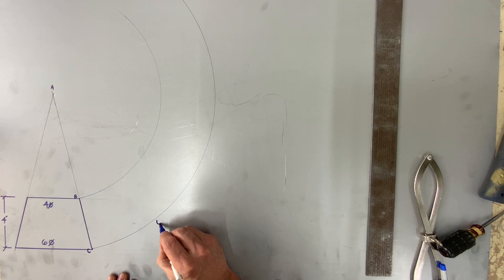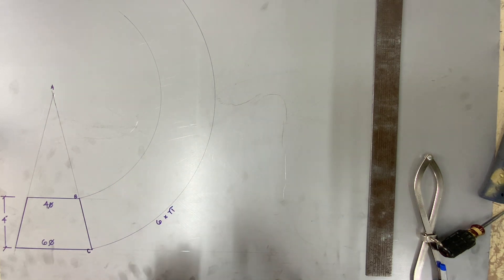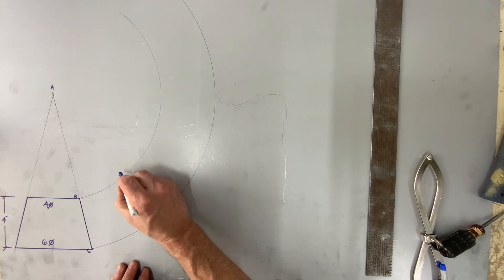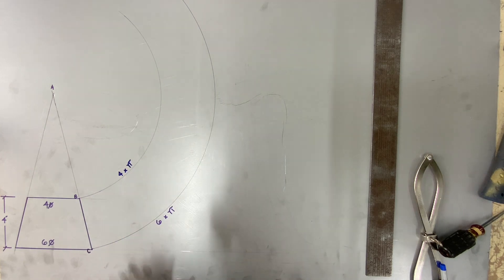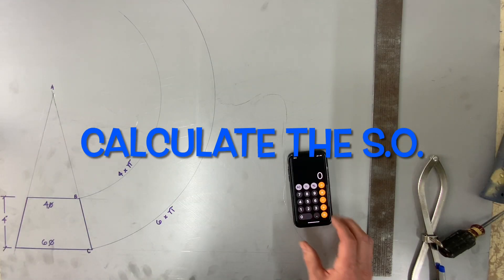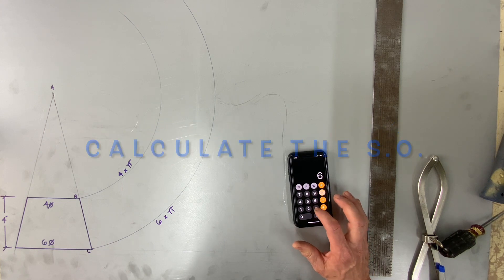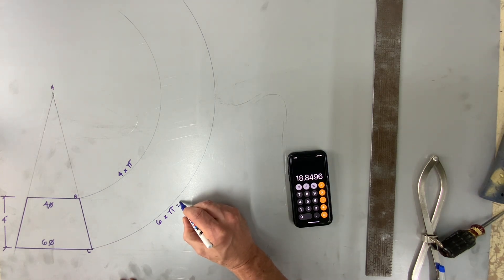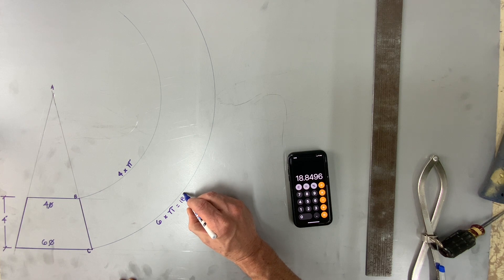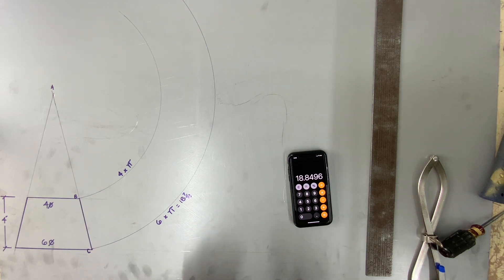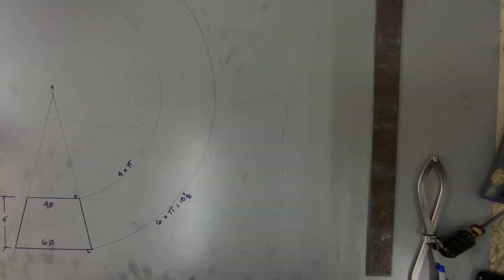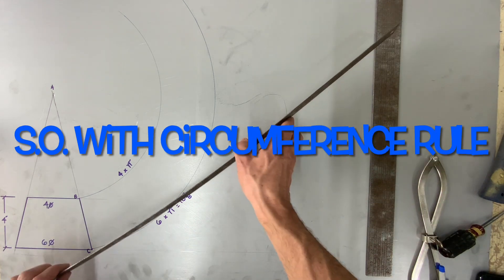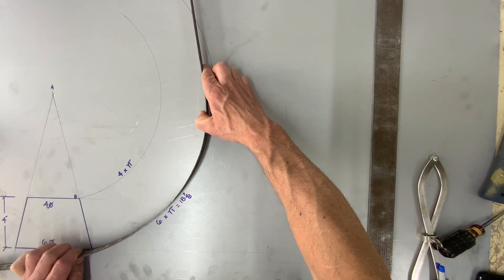The baseline stretch out is six inch diameter. Therefore the complete circle is going to be six times pi and the small diameter on top is four times pi. I prefer working from the larger diameter. Therefore this one is eighteen point eight four, which is seven eighths.